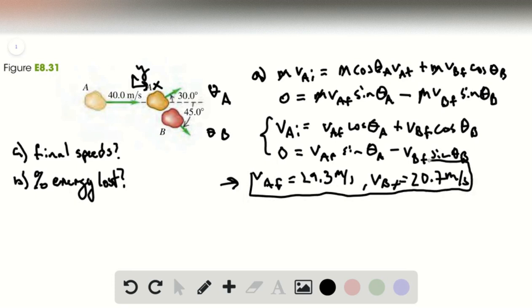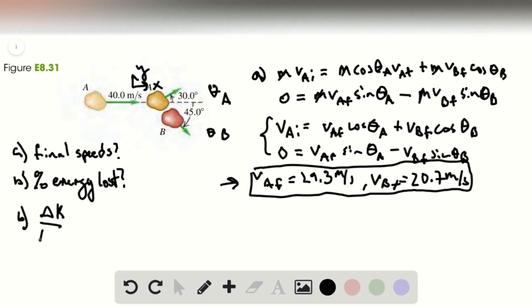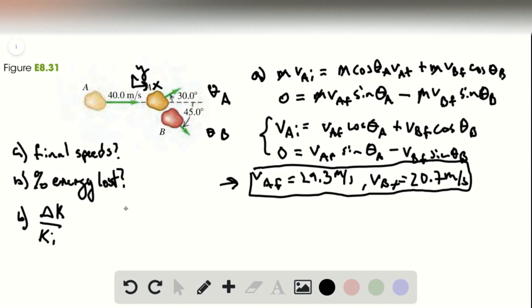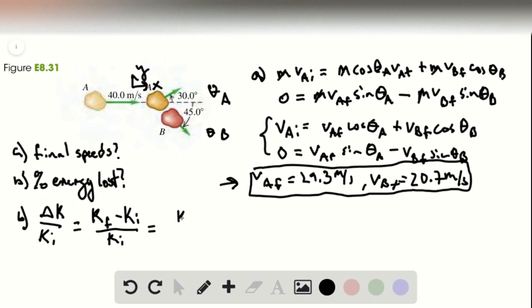So now that we know how fast they're going after the collision, we can start thinking about what fraction or percentage of the kinetic energy is lost. So the percent change in something is the change divided by its initial value. So this will be K final minus K initial divided by K initial. And then this works out to be the ratio of the final and initial kinetic energies minus one.